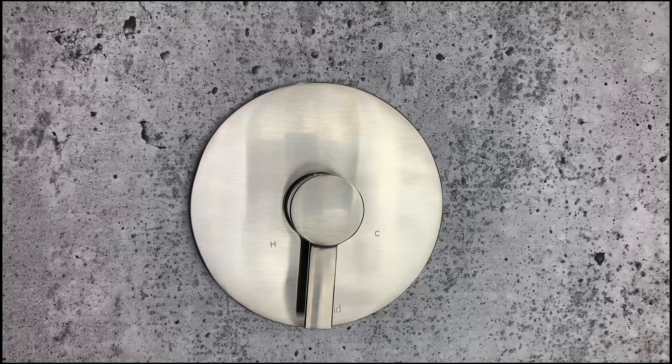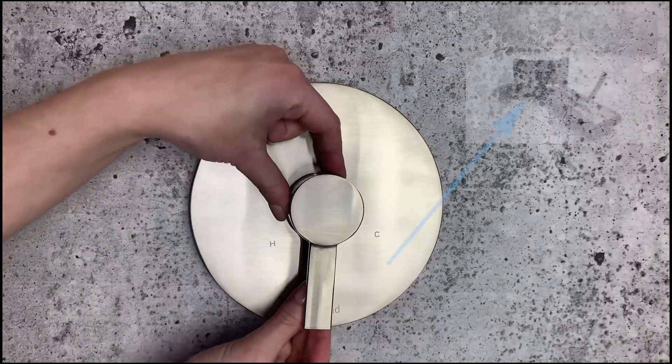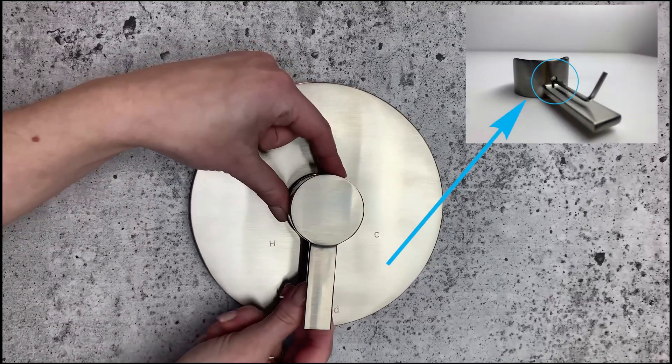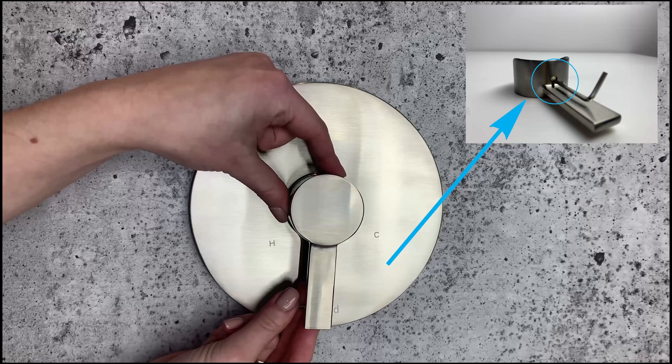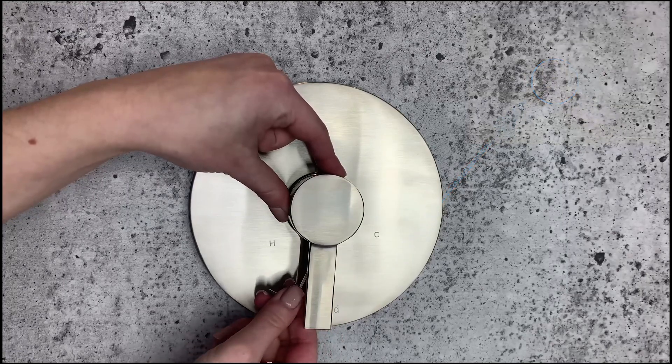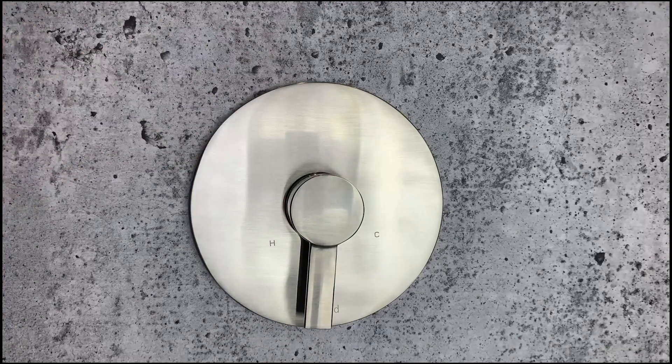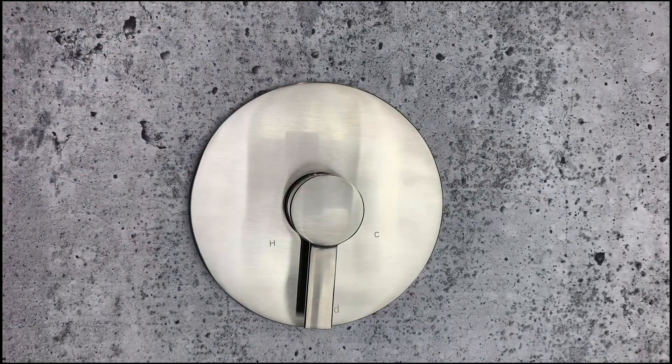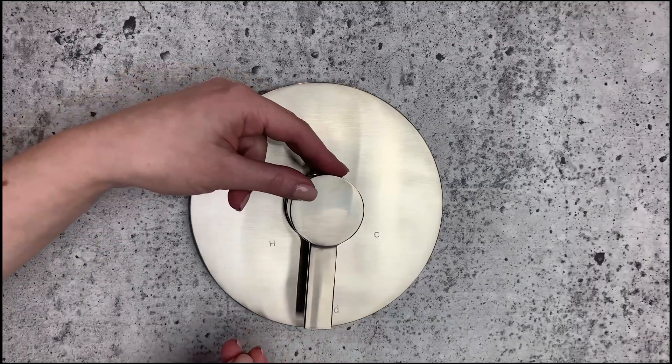Replace the handle and tighten the set screw. You may find it easier to turn the handle to the side to better expose the set screw. Turn the set screw in a clockwise direction until tight. Replace the rubber plug and you're finished.